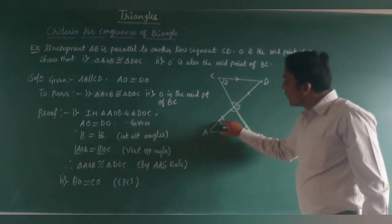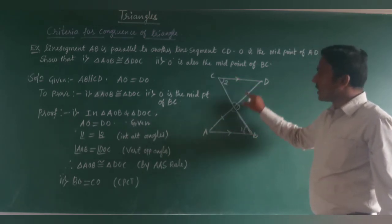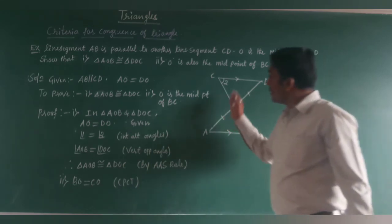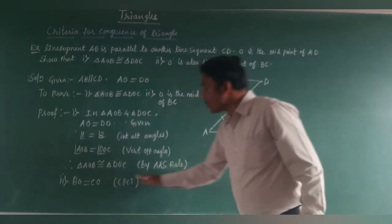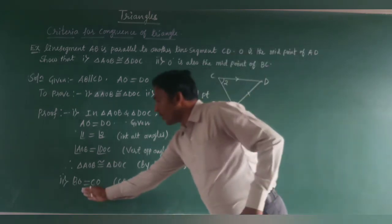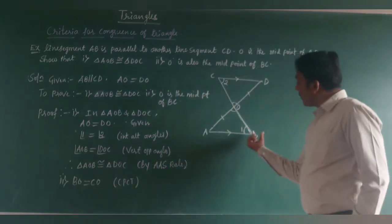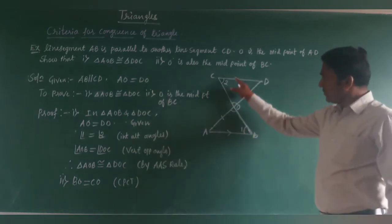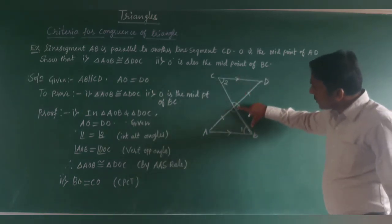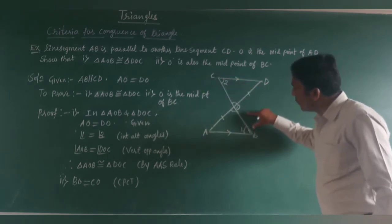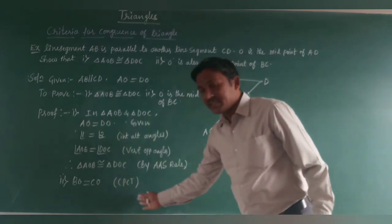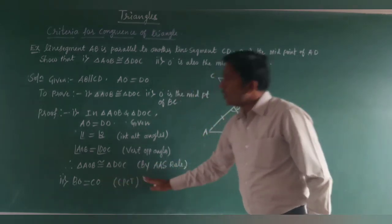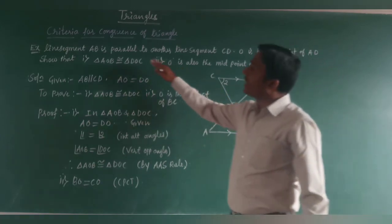Since triangle AOB is congruent to triangle DOC, by CPCT, BO = CO. Therefore O is the midpoint of BC. This completes the solution of the example.